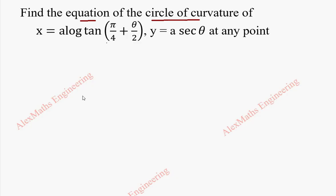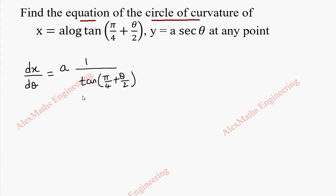In the first part, we are going to find dx by dθ. A is a constant. Log differentiation is 1 by, so whatever the term is there, tan(π/4 + θ/2) is written. Then the tan differentiation is secant square, so secant square of π/4 + θ/2.